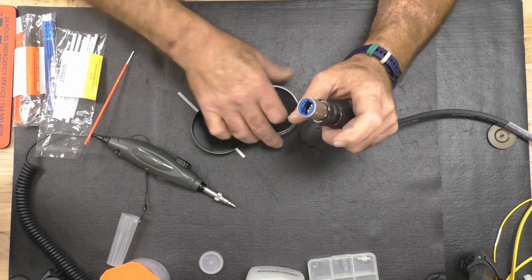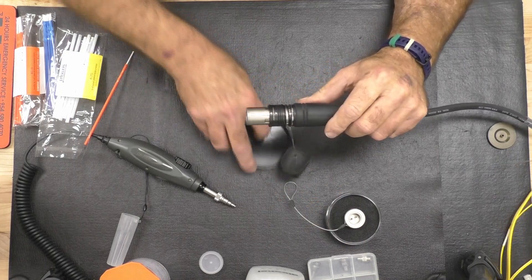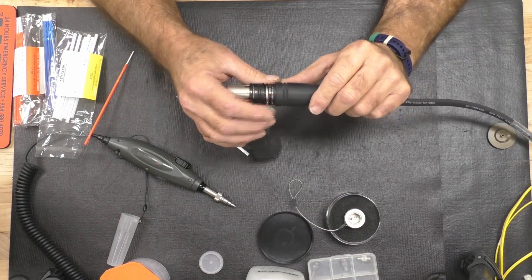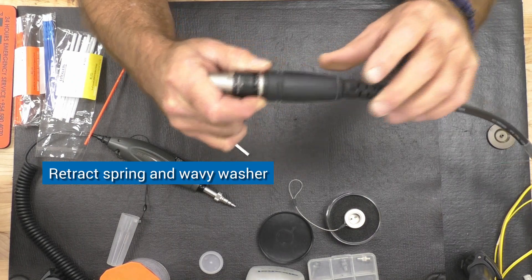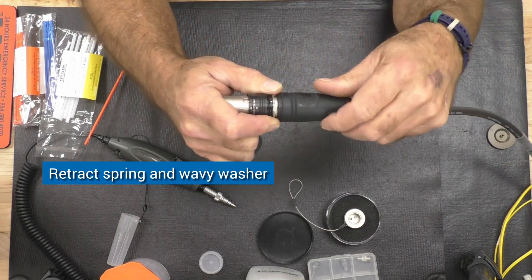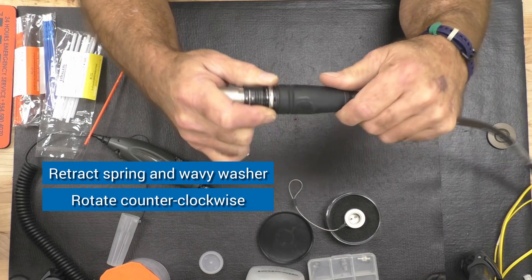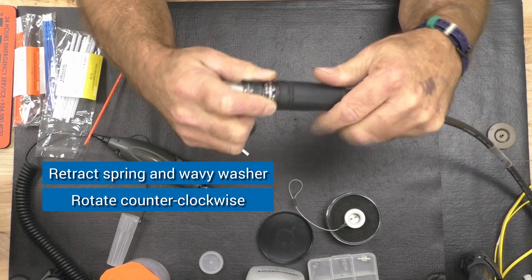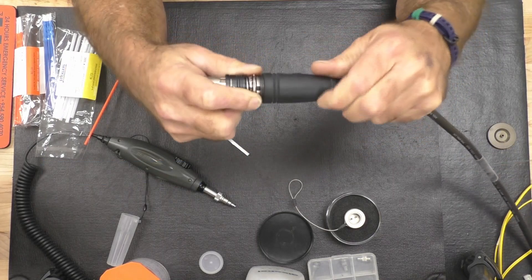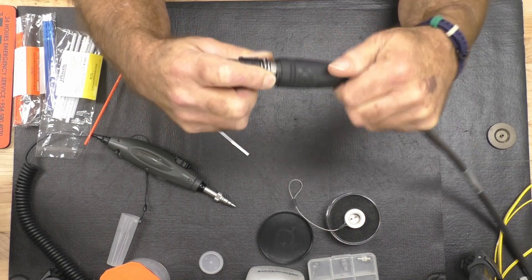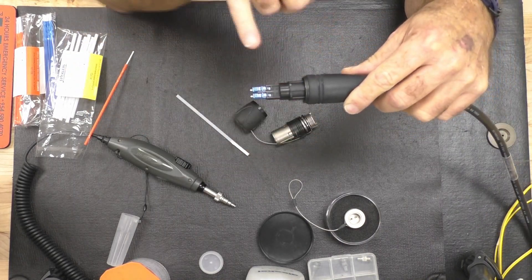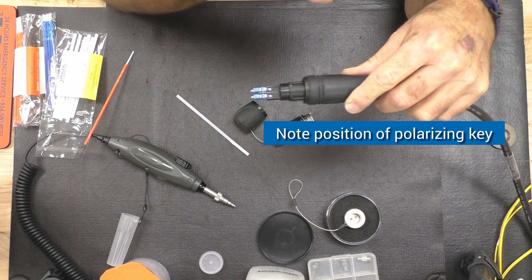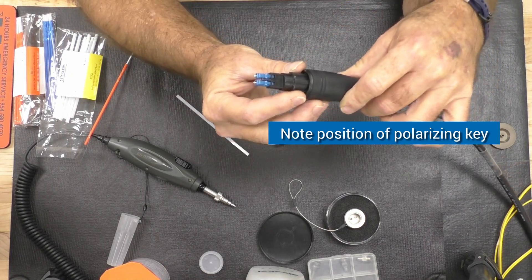Now, if you don't own the tool, your option is to simply remove the head of the connector. In this case, polarize it with the name up. Retract the springs and the wavy washer. And then slowly rotate the back nut. When it clears the threads, you can simply pull the head of the connector off. You'll see there's a large polarizing key. You'll have to note that for reassembly.